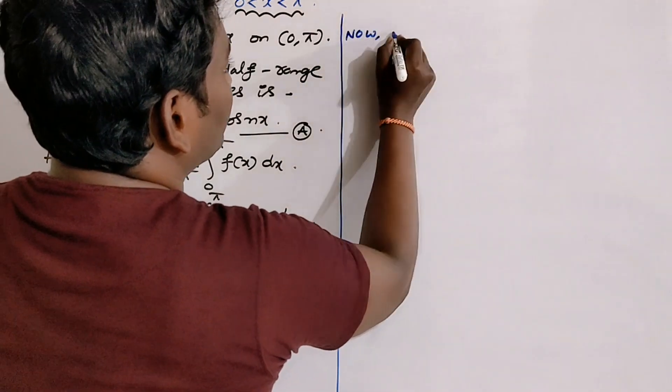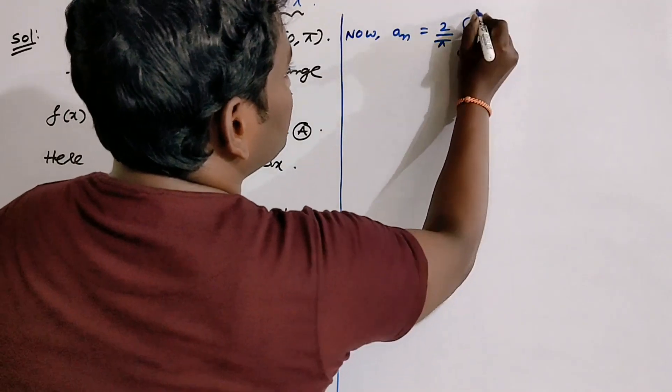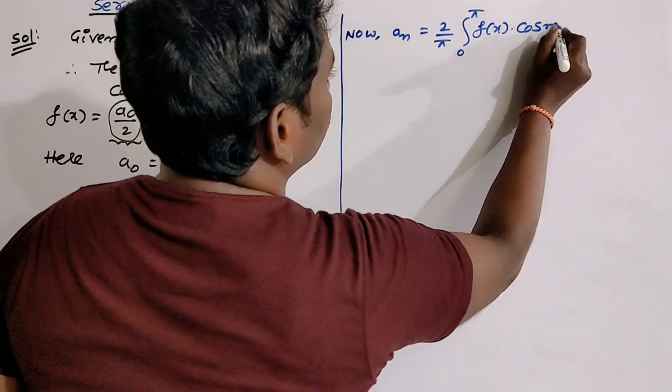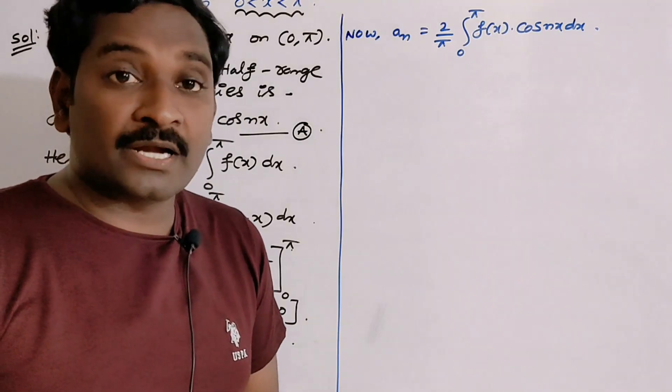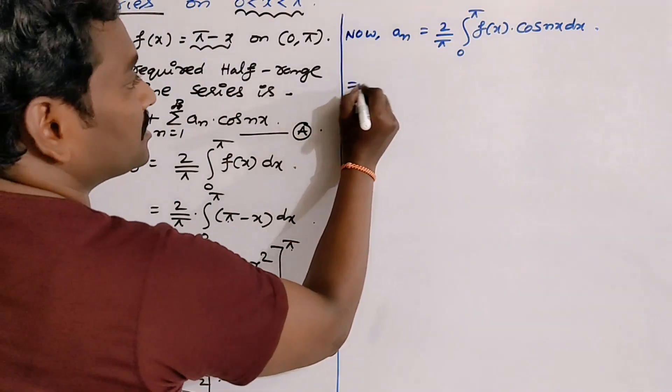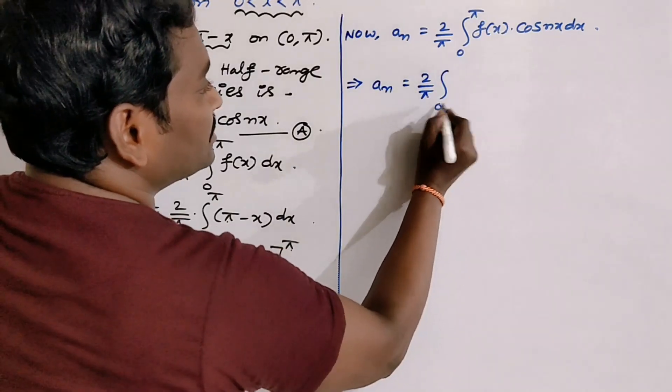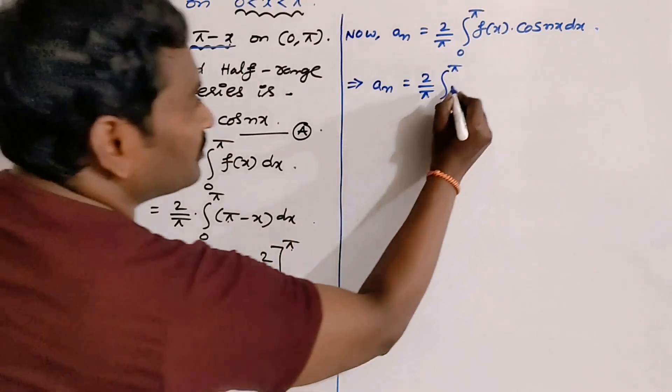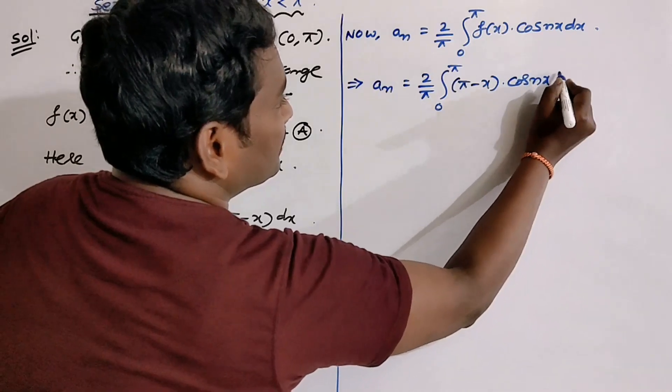Now, the formula for aₙ = 2/π ∫₀^π f(x)cos(nx)dx. Writing the formula of Euler coefficients are very important in the case of half-range expansions. Don't forget it. See, aₙ = 2/π ∫₀^π (π - x)cos(nx)dx.